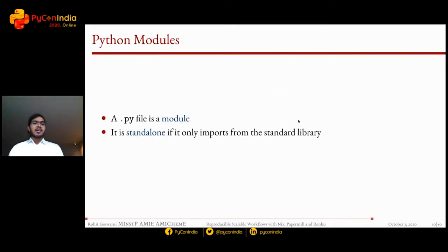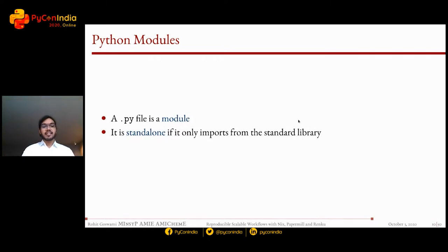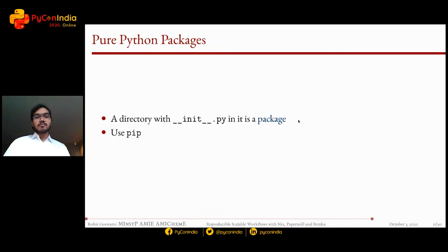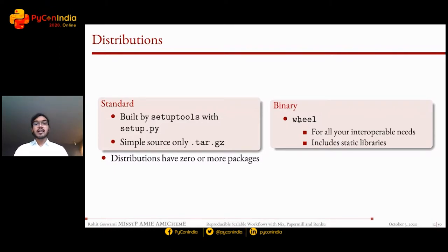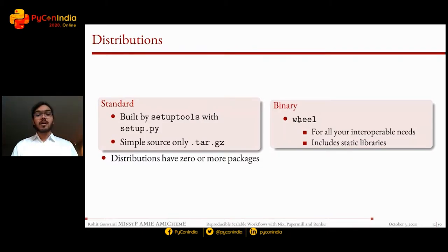How do you generally share code? A .py file is a module — it's standalone if it only imports from the standard library. On a good day, if you send someone your .py file with only standard library imports and they have the same version, everything works — reproducible code. We can go further: a pure Python package with __init__.py. Even further: two types of distributions — sdists that package source files, and binary distributions like wheels, which include static libraries and work across multiple operating systems.